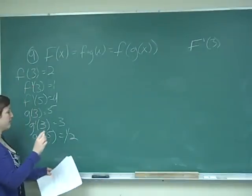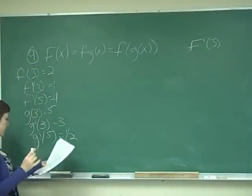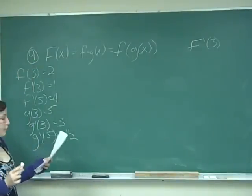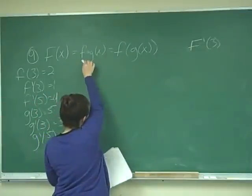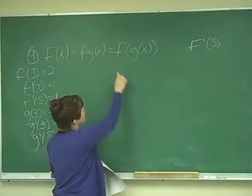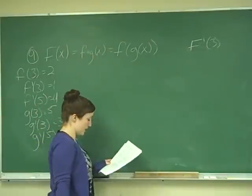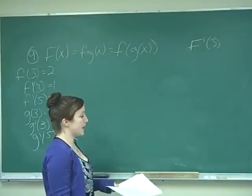So don't get overwhelmed, I know that's a lot of information. Let's solve this. It says, if F of x is equal to f of g of x, or when written like this, f of g of x, find F prime of 3.